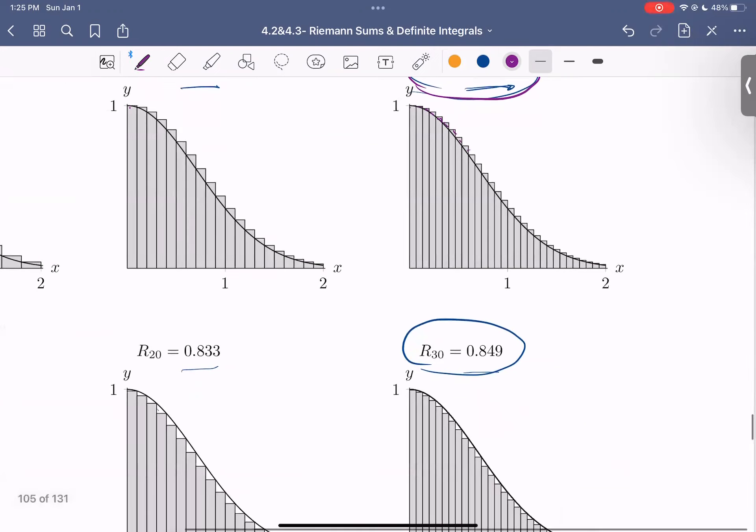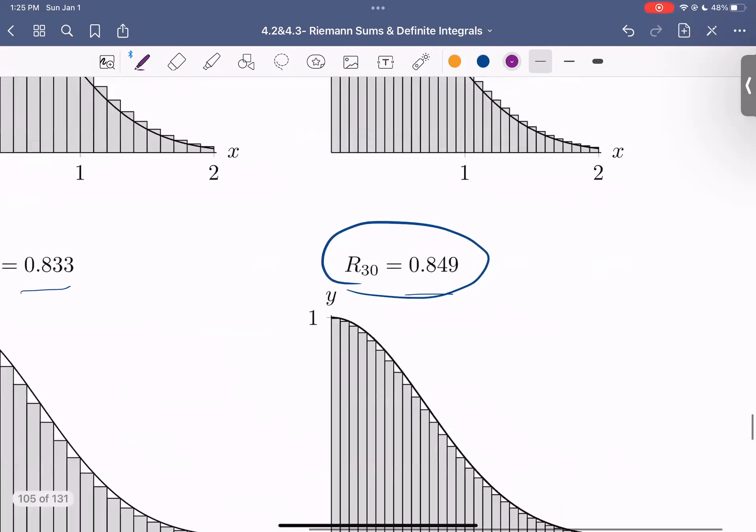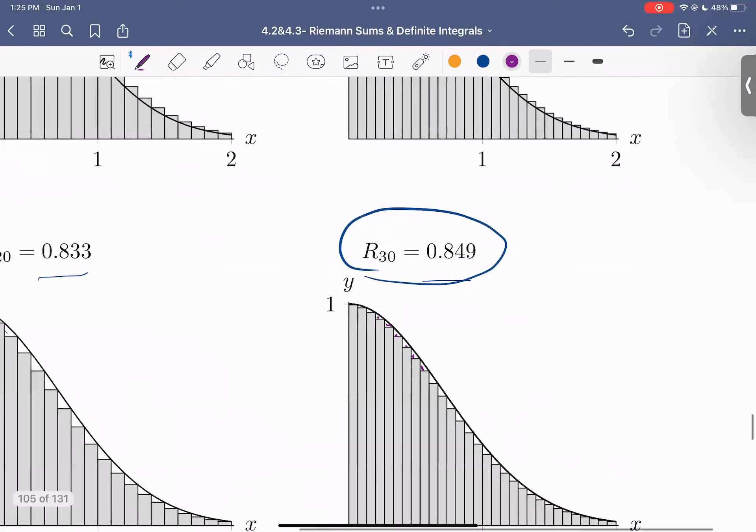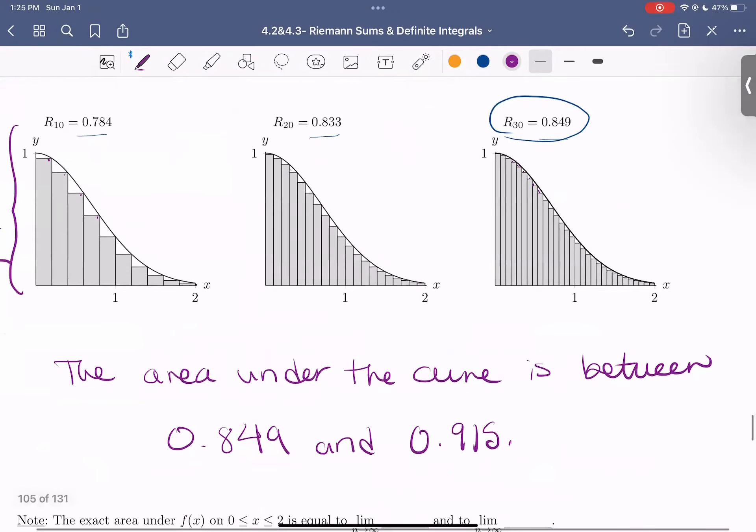And our right sum rectangles are underestimating the area. Here's the area they miss. So our actual area is going to be somewhere in between those two values.